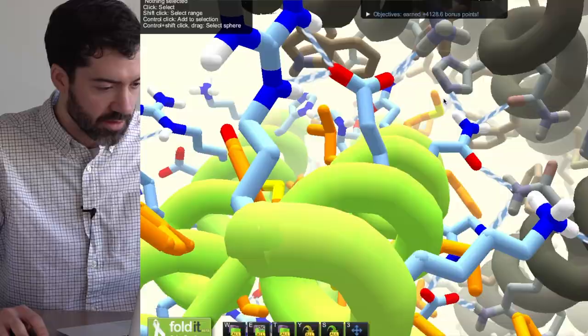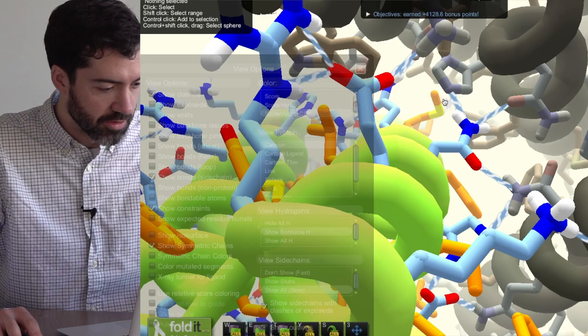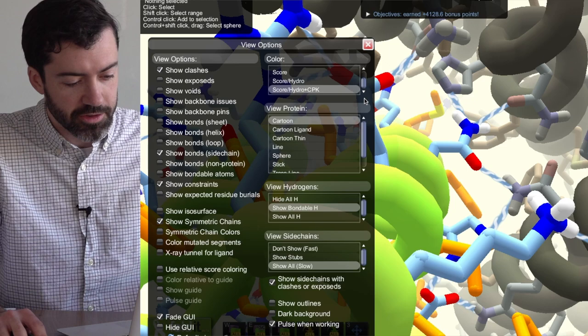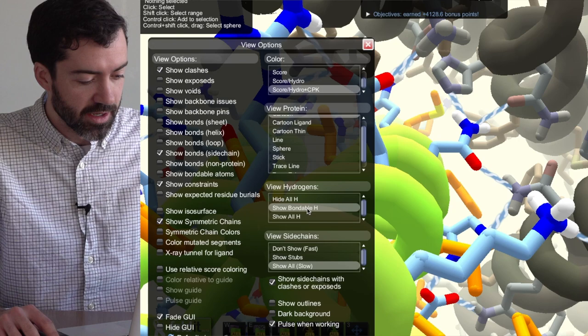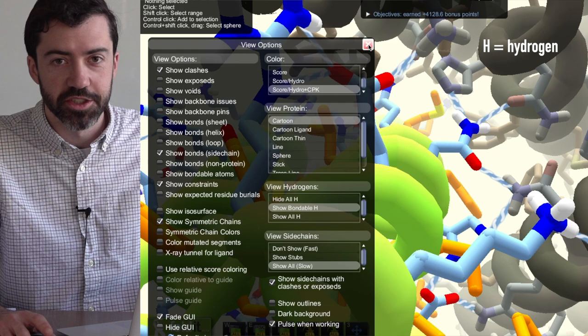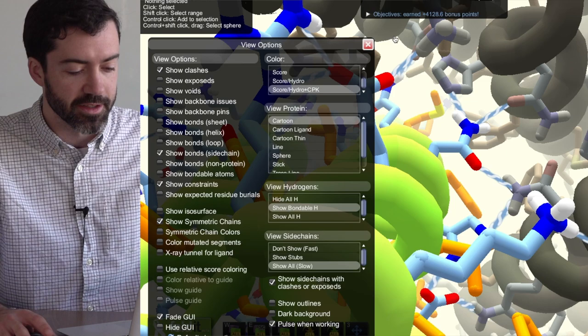I should use a mouse. Okay, so on my view options here, I've used the CPK coloring, so that we can see blue nitrogen atoms and orange oxygen atoms. This helps us show all the polar atoms that need to make hydrogen bonds. And I'm also showing the bondable hydrogens, so that we can clearly see which atoms are H-bond donors that have hydrogen on them, and which are H-bond acceptors. These are like the red oxygens, mostly, that don't have hydrogens. And then we click show bond sidechain, so we can see all the hydrogen bonds in the protein.